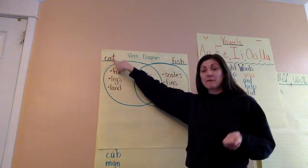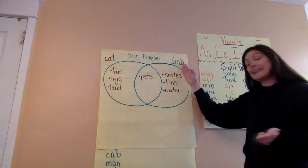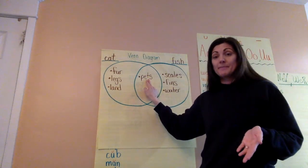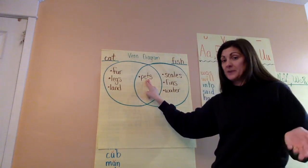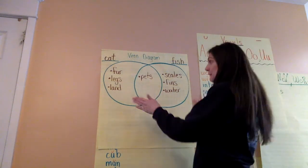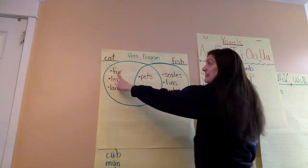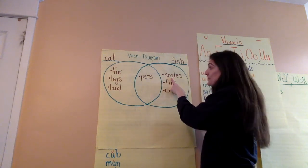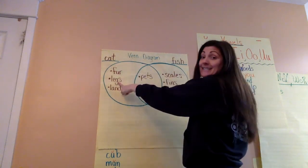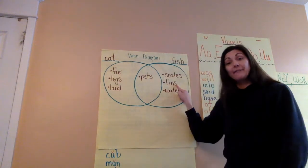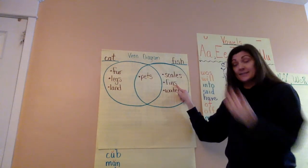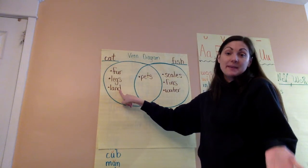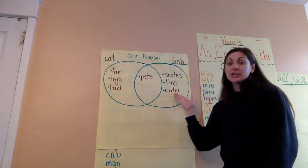A fish and a cat. I have cat as my first heading and fish as my second heading. Something that's the same about them is they're both pets, so I put that in the middle where my similarities go. Something that is different: my cat has fur, my fish is covered in scales. My cat has legs and the fish has fins. Cats live on land and breathe air, whereas fish live in the water.